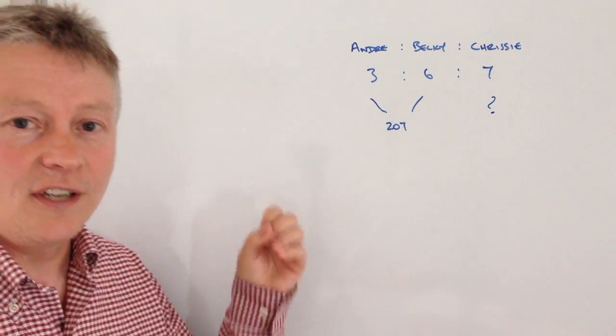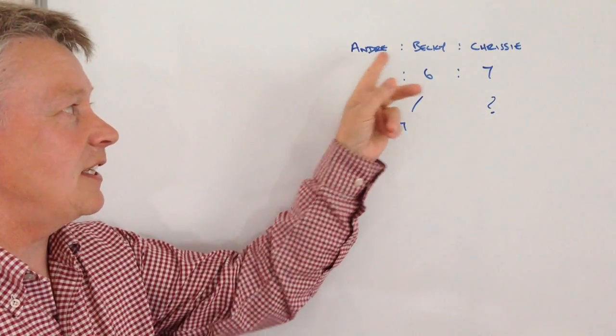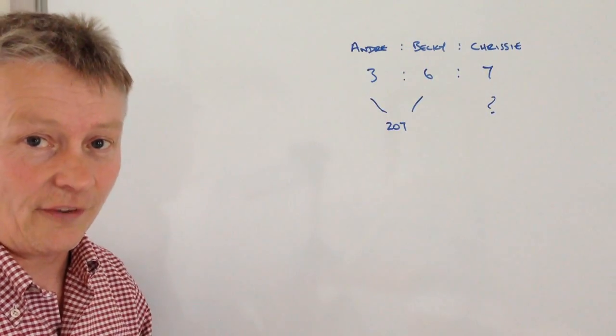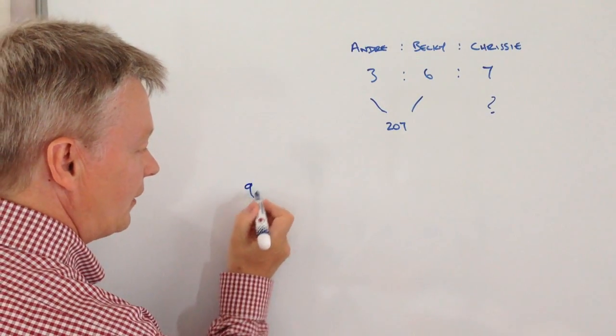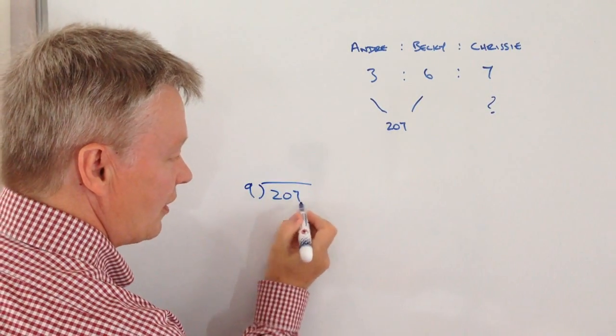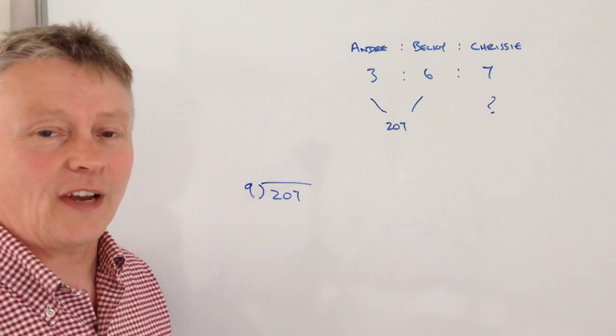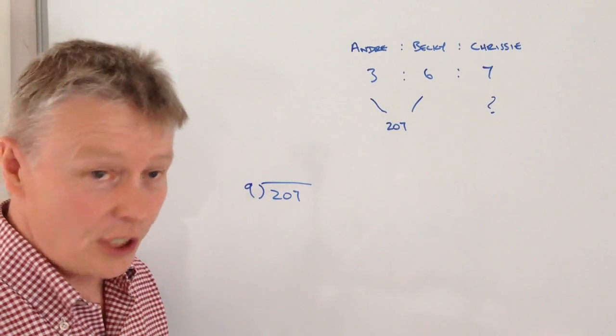So what we're saying is the 9 shares that these two get is £207. If I divide 9 into £207, I can find the value of 1 share.